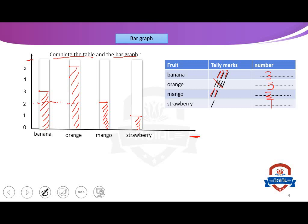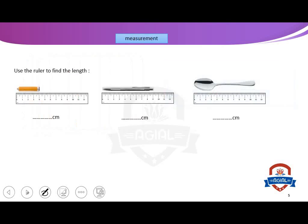You remember bar graph and how to complete the table and complete the bar graph by coloring. Now, measurement. Use the ruler to find the length. If we have a ruler, we know it starts at zero. To find the length, we put the ruler on your pencil, pen, spoon, notebook, or anything, and we start by zero.